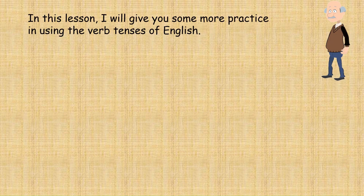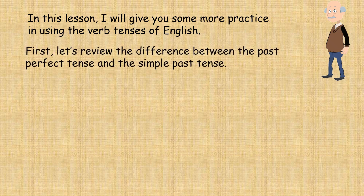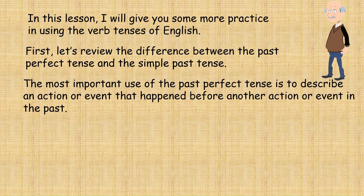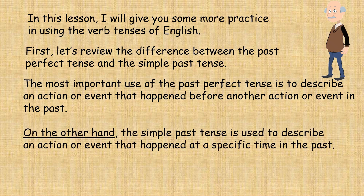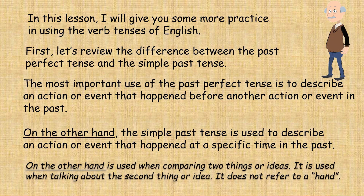In this lesson, I will give you some more practice in using the verb tenses of English. First, let's review the difference between the past perfect tense and the simple past tense. The most important use of the past perfect tense is to describe an action or event that happened before another action or event in the past. On the other hand, the simple past tense is used to describe an action or event that happened at a specific time in the past. 'On the other hand' is used when comparing two things or ideas — it is used when talking about the second thing or idea.